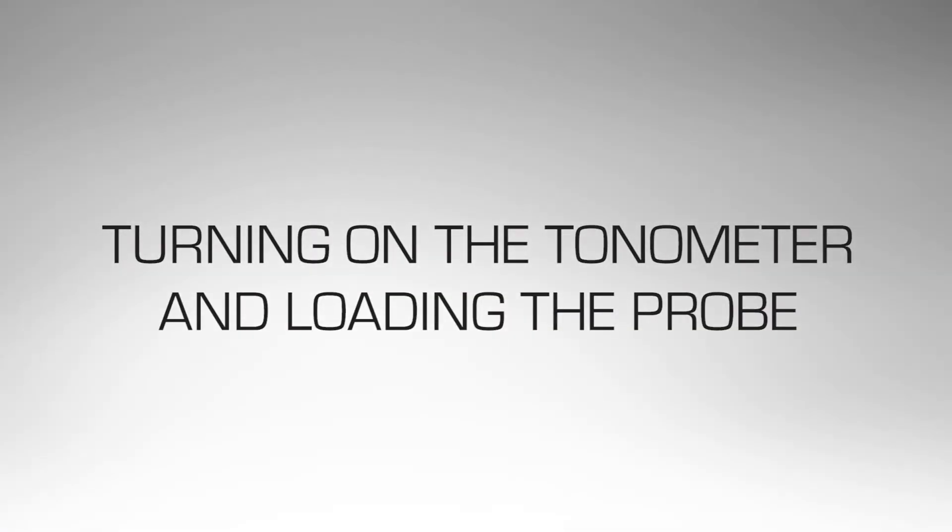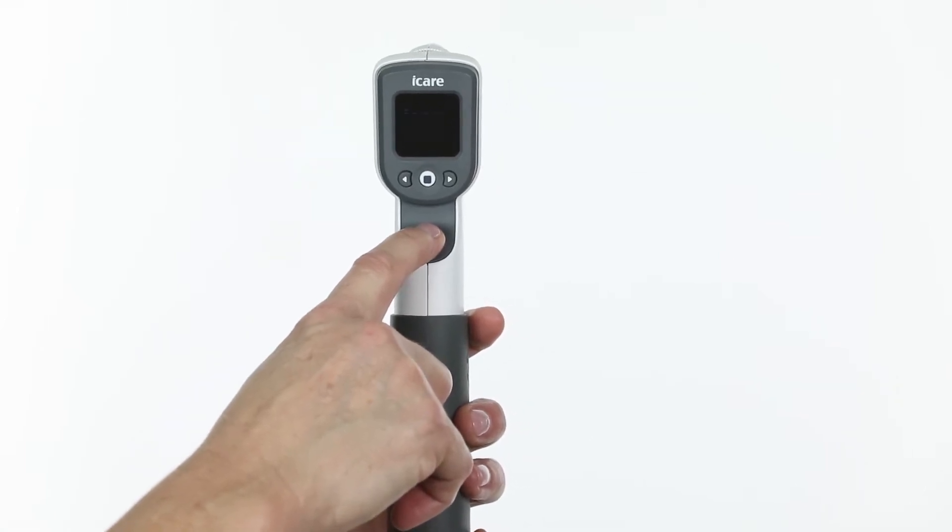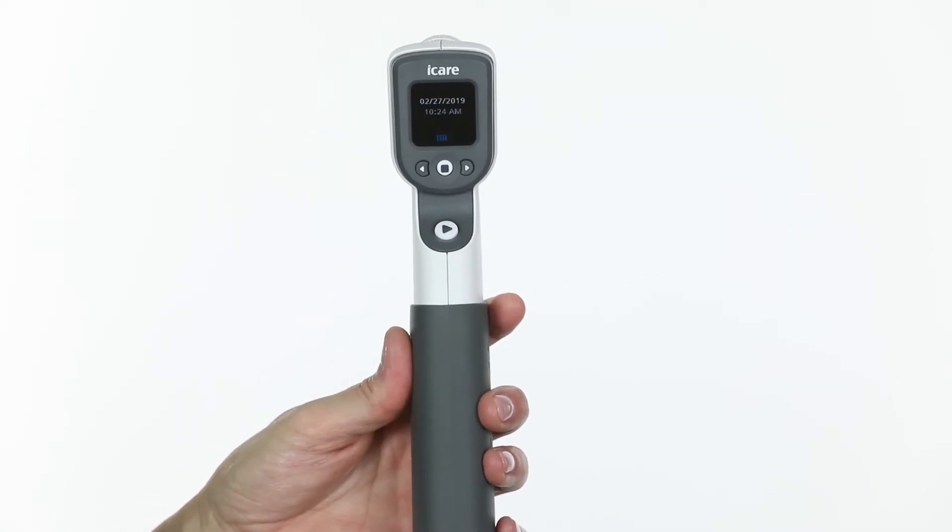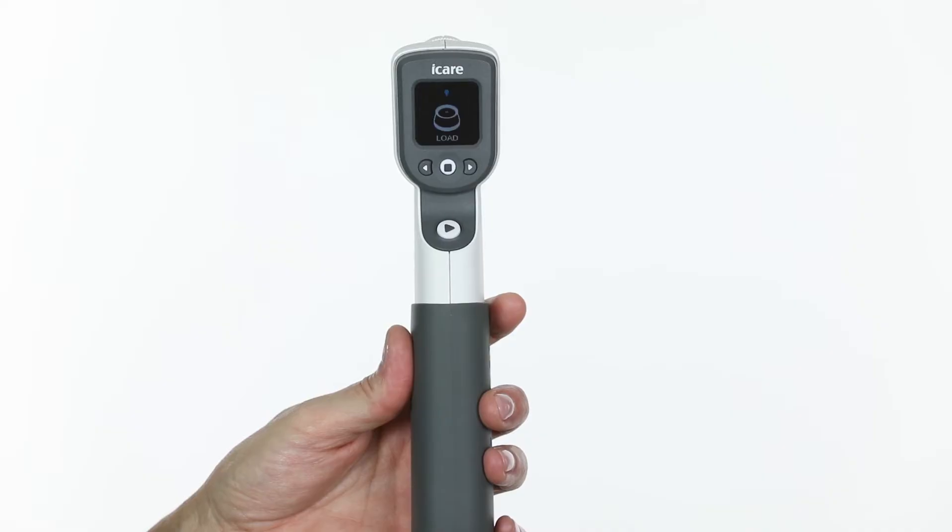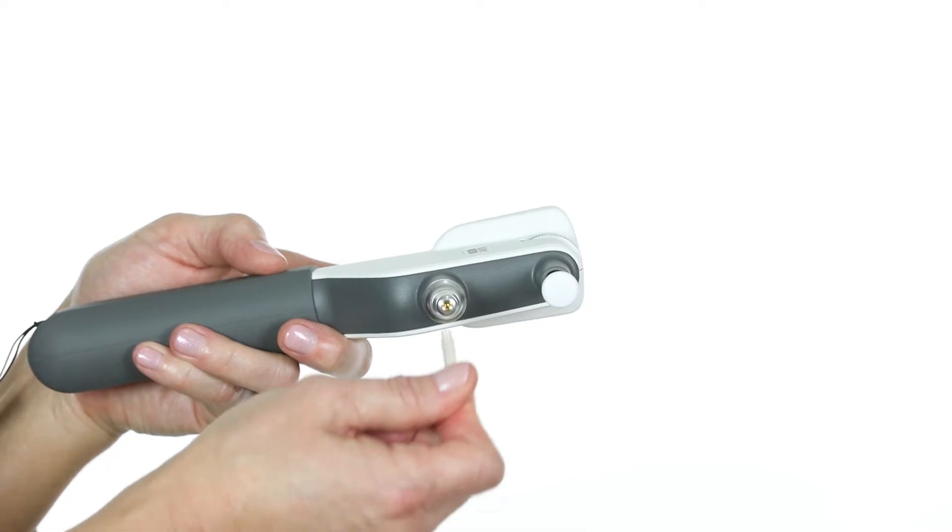Turning on the tonometer and loading the probe: To turn on the tonometer, press and hold the measure button for 3 seconds or until you hear a beep. Load the probe into the tonometer when the display screen shows load. Open the probe tube and insert the single-use probe into the probe base.